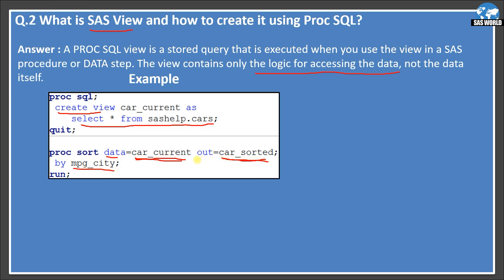Importantly, if you forget to use the OUT statement here, SAS will throw an error. Why? Because car_current is not a dataset — it is just a view. Without the OUT statement, SAS would try to sort in place on the master dataset specified in the DATA statement, but there is no such master dataset since this is a view. That is why SAS gives an error, so always use the OUT statement when sorting a view.